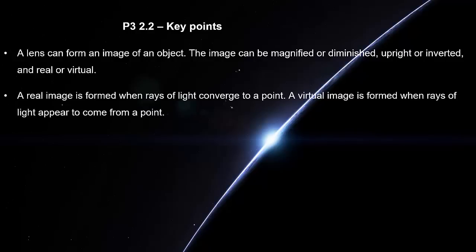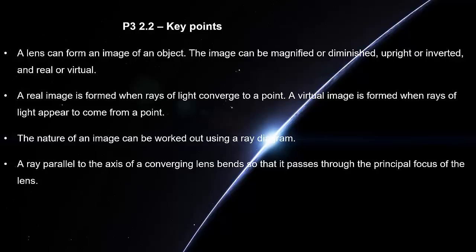A real image is formed when rays of light converge to a point. A virtual image is formed when rays of light appear to come from a point. The nature of an image can be worked out using a ray diagram. A ray parallel to the axis of a converging lens bends so that it passes through the principal focus of the lens.